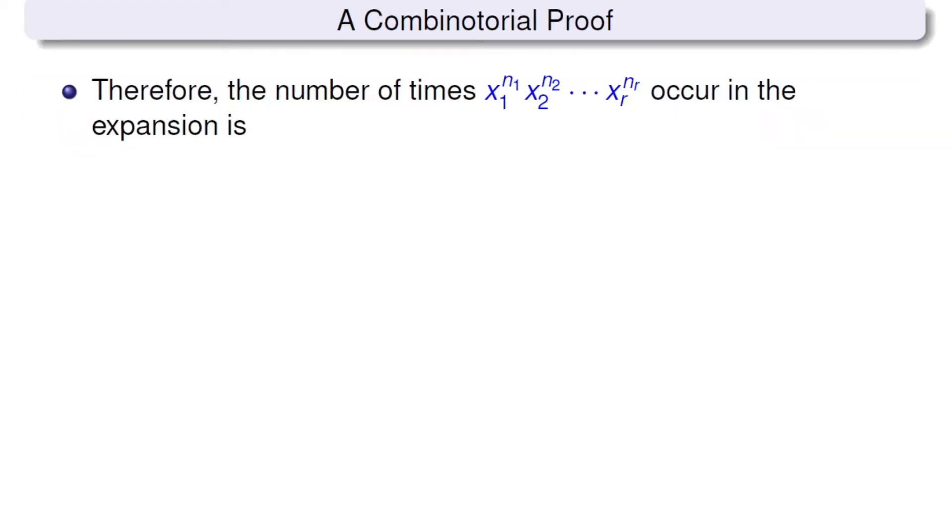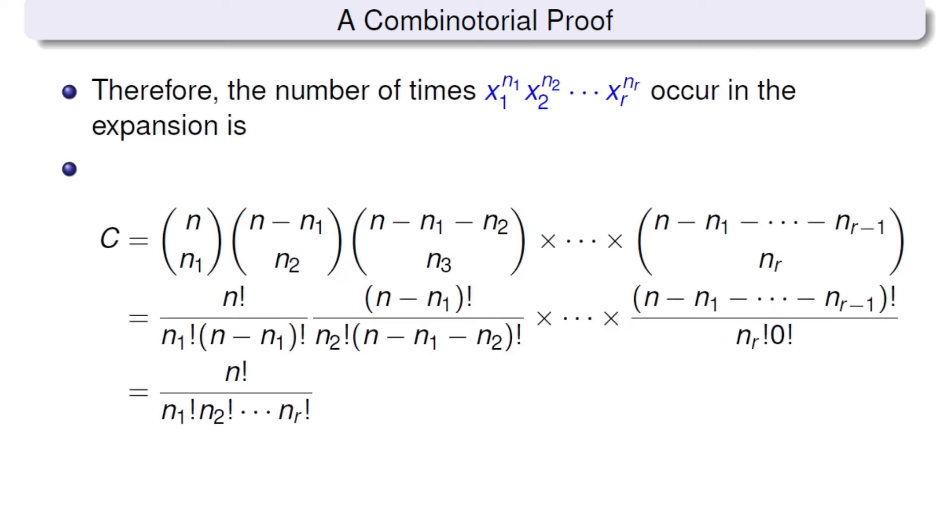Therefore, the number of times this term occurs in the expansion is going to be by product rule, multiplication rule for the counting. It is going to be c equals n choose n1, n minus n1 choose n2, and so on, and finally n minus n1 minus n2 minus nr-1 choose nr.